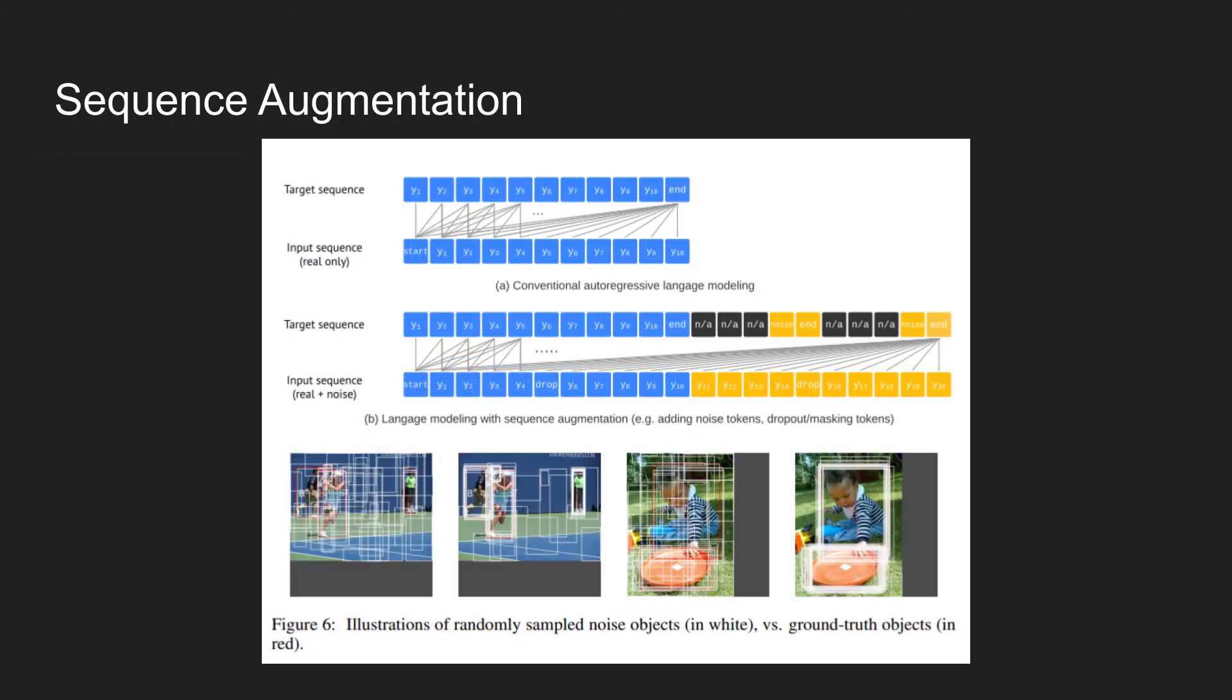In order to improve the performance of the model, the authors use the sequence augmentation technique. In conventional autoregressive language modeling tasks, the target sequence is the same as an input sequence. The only difference is that there's a start token in the input sequence and the end of sentence EOS token in the target sequence.